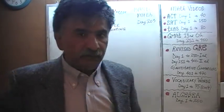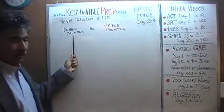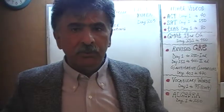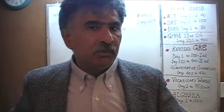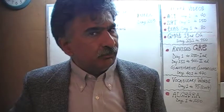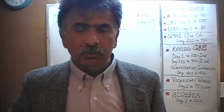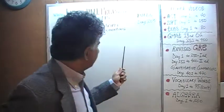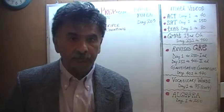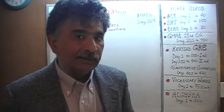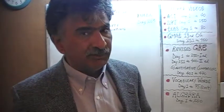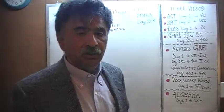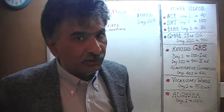Today we will learn the difference between the concept of something being double counted and something being triple counted. When we are dealing with Venn diagrams, we have to understand the notion of when we end up double counting something or triple counting something. We will deal with these two notions side by side so that we can compare the difference between the two and detect exactly how many people or objects are being double counted or triple counted. Let's start with something very simple — a scenario where we end up double counting.